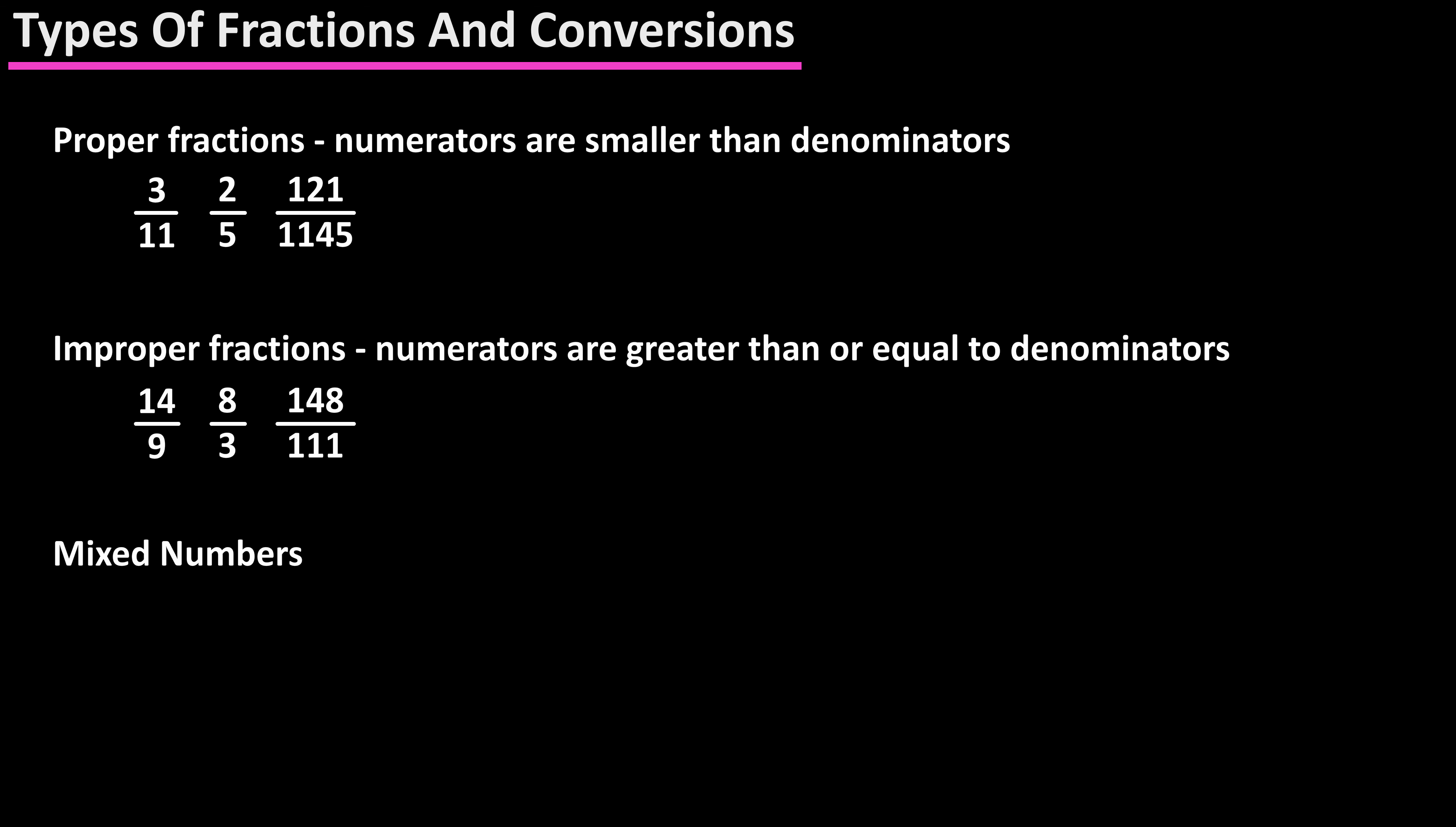Improper fractions have numerators that are greater than or equal to denominators, such as 14 over 9, 8 over 3, or 148 over 111. Mixed numbers have a whole number and a fraction, such as 14 and 3 fifths, or 162 and 8 ninths.